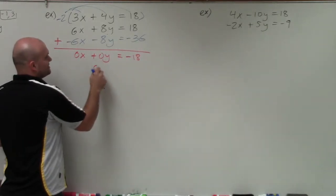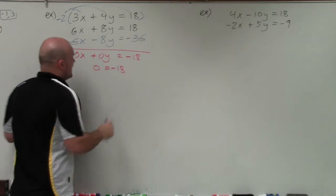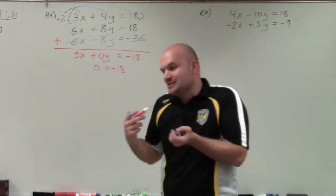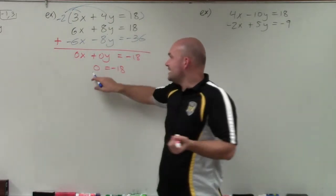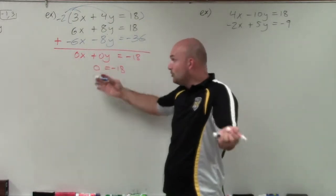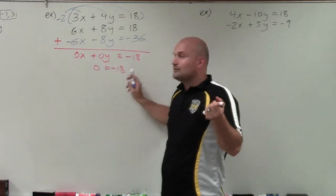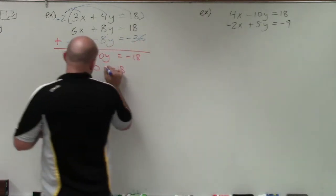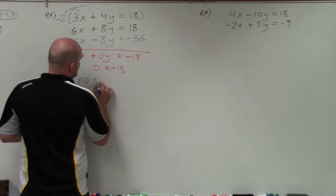Well, 0x plus 0y is 0 equals negative 18. And 0 does not equal negative 18. So whenever you're using elimination and you combine them and you lose your variables, you eliminate both variables instead of just one, and you're left with an equation that is not true, therefore you have no solution.